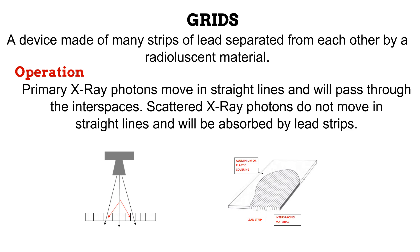Observe this on the diagram. While the black primary photons easily pass through the interspacing material, the red scattered photons are not moving straight and are absorbed by the lead strips. This is the basic manner by which grids function.